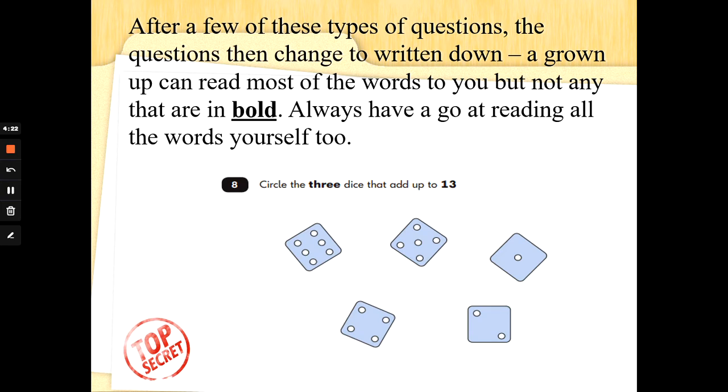After a few of these types of questions, the questions then change to be written down. A grown-up can read most of the words to you but not any that are in bold. Always have a go at reading everything on the page yourself too. So the words in bold are the darker words. So the word 3 here and the number 13. But this is special agent training. I'm going to help you as much as I can today so don't you worry.